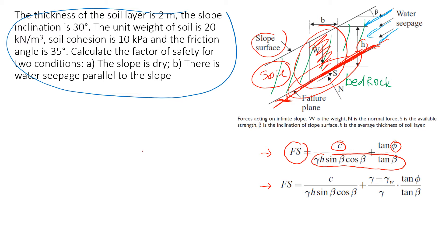Now let's see how we use the formulas to estimate the stability of this particular slope. What we know from the problem is that the thickness of the soil layer is 2 meters, so h equals 2 meters. The slope inclination β is 30 degrees. The cohesion of soil, c, is 10 kPa. The friction angle is 35 degrees. We need to estimate the factor of safety for two conditions: a) for the slope when it's dry, and b) when it's wet and there is water seepage.